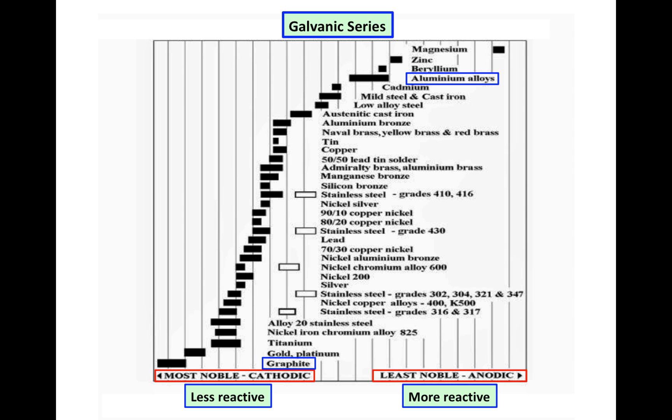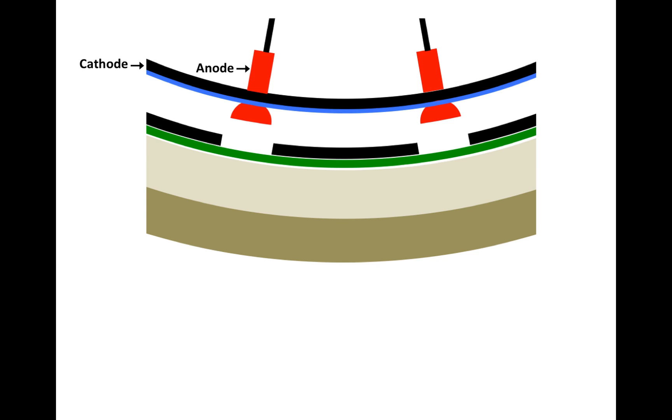So in this galvanic reaction, we're looking at aluminum nipples giving up electrons to graphite. Let's just say that I try to describe this reaction as simply the transfer of electrons from the anode, which is the nipple, to the cathode, which is the carbon composite rim.